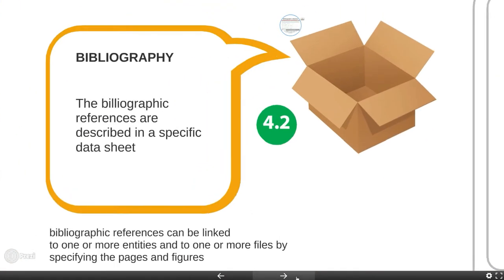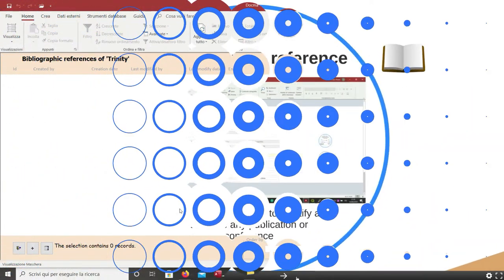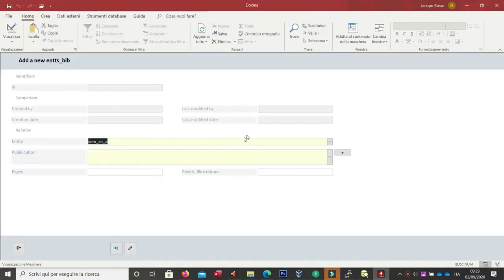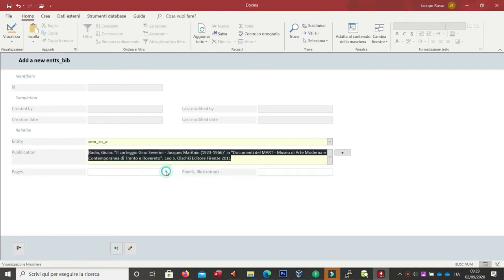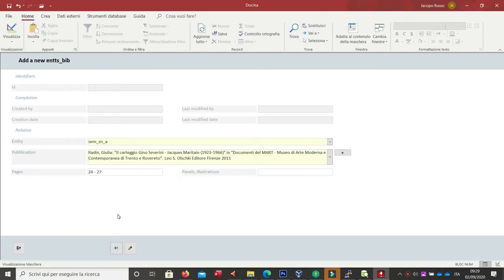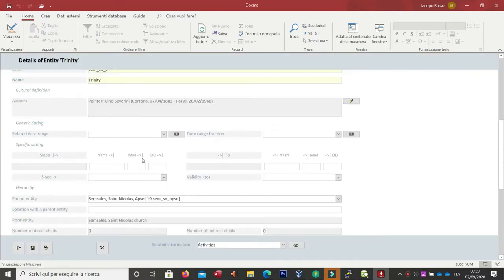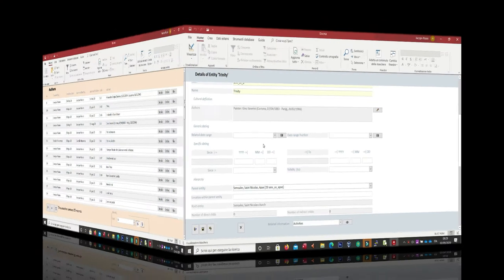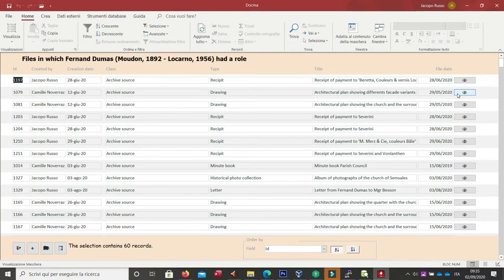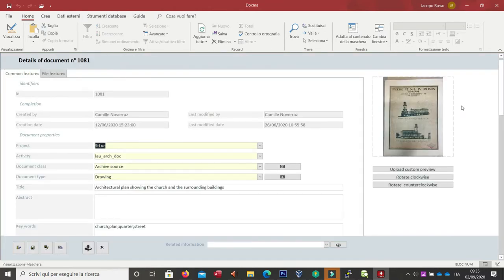As for authors, we can identify any publication and subsequently link it to entities and files. In those links, we will specify the page numbers and images that actually reference the entity within the publication. A summary of the bibliography appears in the referenced sheet and is updated in real time if the publication record is changed. This behavior is similar for the linked authors. Links between sheets can also be used to quickly browse entities and files, for example, by selecting all files in which an author had a role.